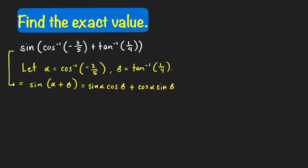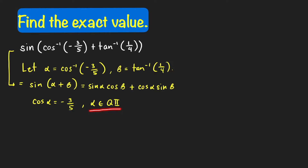From alpha equal to cosine inverse of negative 3 over 5, using the definition of arccosine, we get cosine(alpha) = negative 3 over 5, and the angle alpha is in quadrant 2. Keep in mind that the range of cosine inverse is only from 0 to pi, but since cosine is negative, the angle must be in quadrant 2.